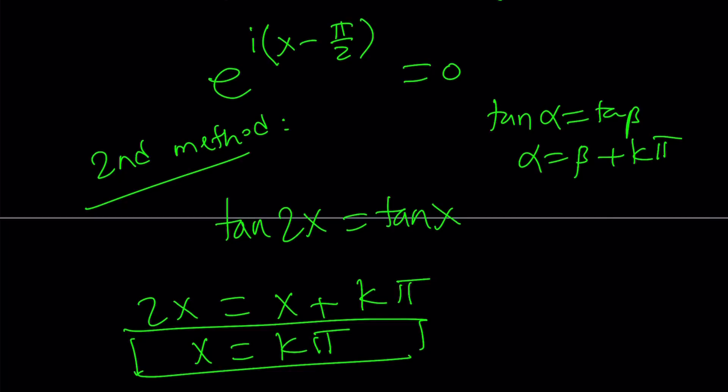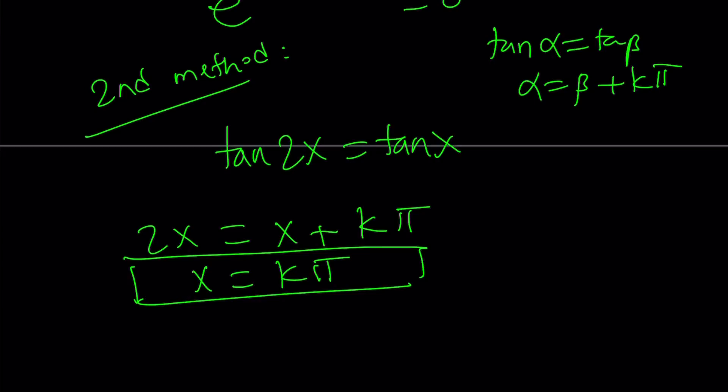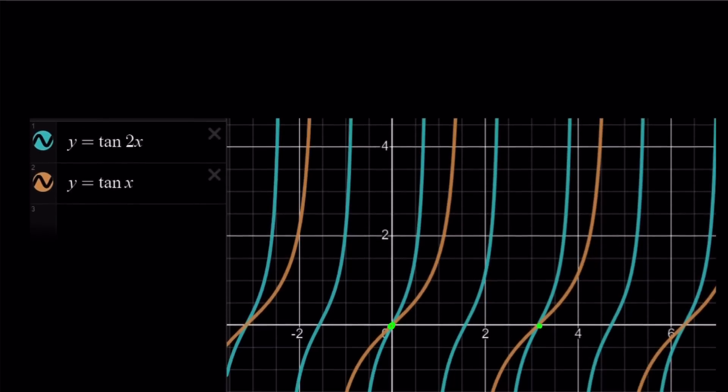Of course, this gives us only real solutions. The complex solutions, you have to do a little bit more. That's why the second approach only gives you the real ones. Is there any way to get the complex solutions from here? I do not know. Maybe you do. Let's go ahead and take a look at the graph and see what it means.